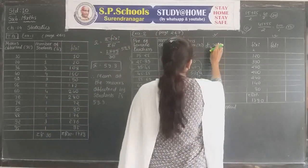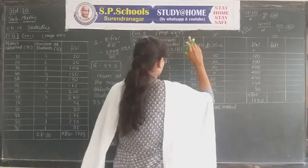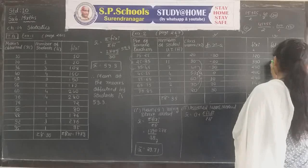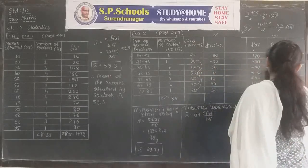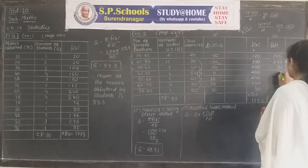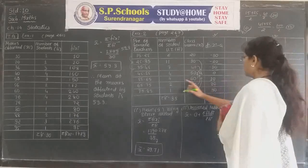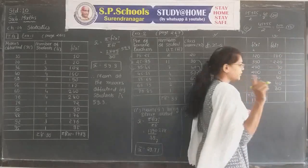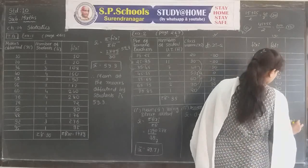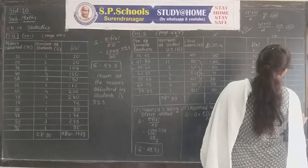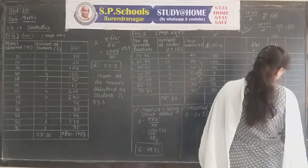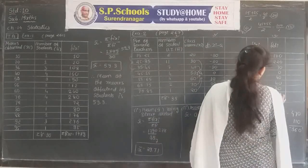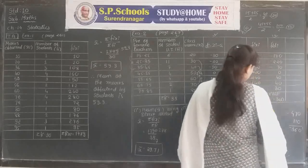Now multiply fi and di: 6 × (−30) = −180, 11 × (−20) = −220, 7 × (−10) = −70, 4 × 0 = 0, 4 × 10 = 40, 2 × 20 = 40, 1 × 30 = 30. Adding positives: 40 + 40 + 30 = 110. Adding negatives: 180 + 220 + 70 = 470. Subtracting: 470 − 110 = 360, so Σfi·di = −360.